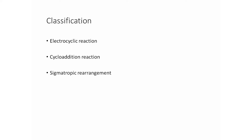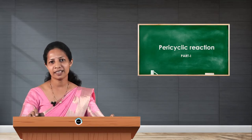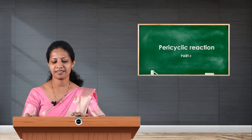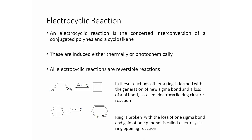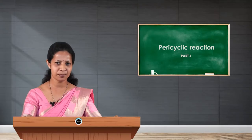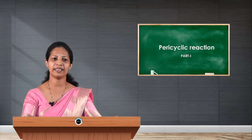The three classes are: first, electrocyclic reactions; second, cycloaddition reactions; and third, sigmatropic reactions. Electrocyclic reactions are concerted interconversions of conjugated polyenes and cycloalkanes, where the conjugated molecule undergoes cyclization to give a cyclic compound. These reactions are reversible and are induced either thermally or photochemically, with two types: ring closure and ring opening reactions.